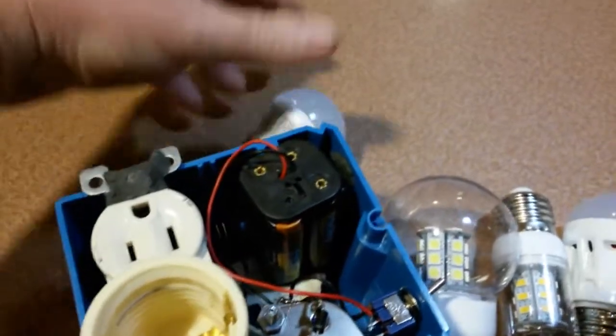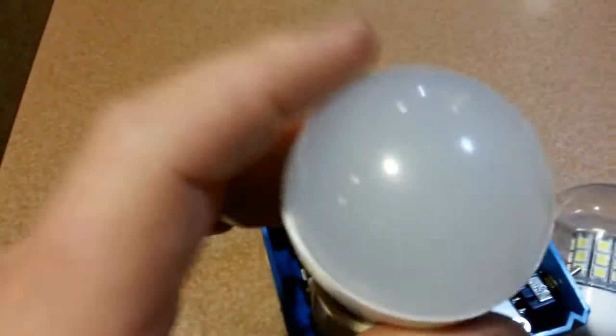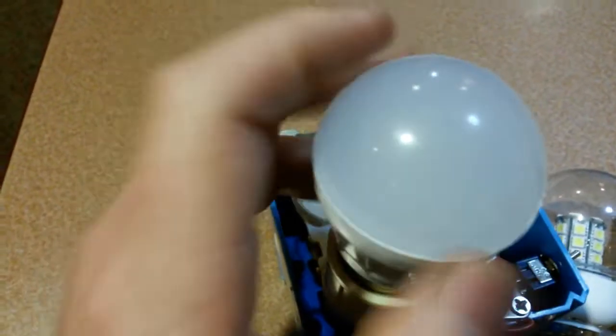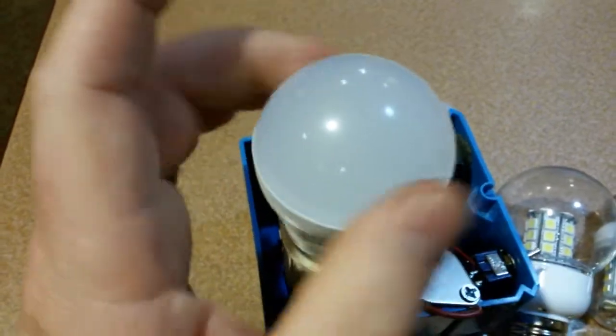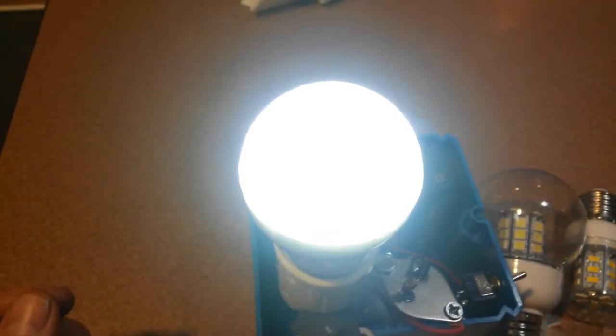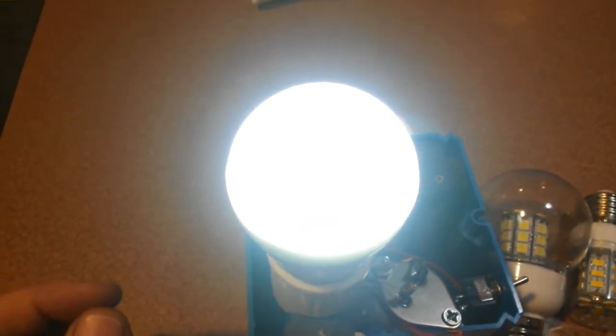We'll start with the 10 watt since that's a 10,000 happy lights. 10,000 happy lights has an ultraviolet and an infrared in there, so it's supposed to make you feel better.